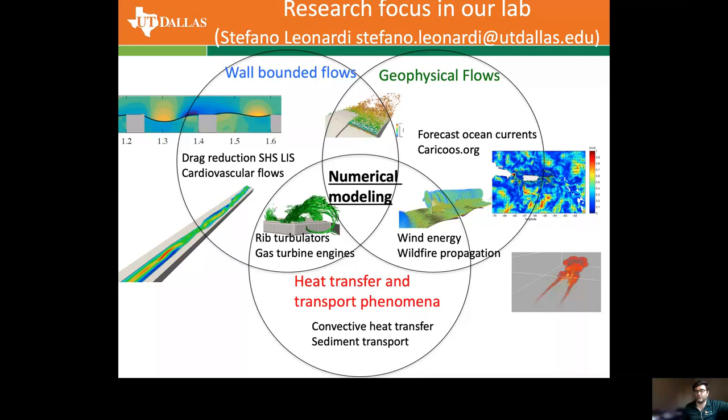With regards to heat transfer, we are studying how roughness in gas turbine engines can increase heat transfer, thus reducing the temperature of the blade. This makes it possible to increase the temperature of the fluid in the combustion chamber, increasing the Brayton cycle efficiency and the overall efficiency of the engines.